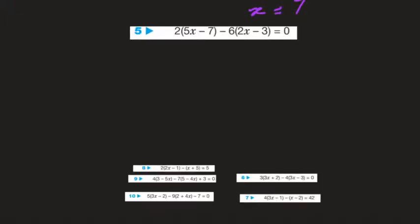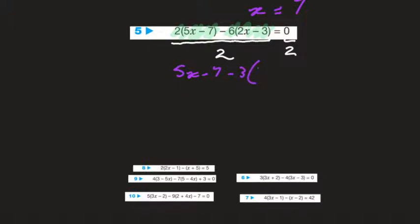This one I'm going to divide through by 2. Each of these is a whole term, so I'm going to divide each of those by 2. 2 divided by 2 is 1, so we've got 5x minus 7, minus 6 divided by 2 is minus 3, giving us minus 3 times (2x minus 3) equal to 0.